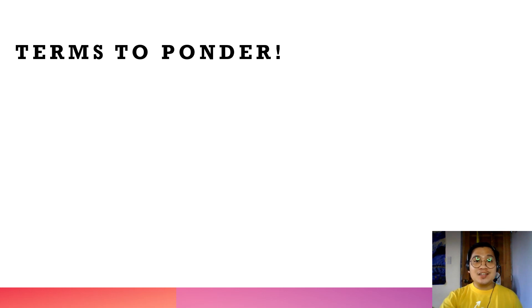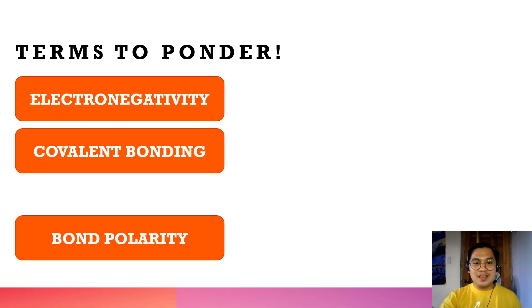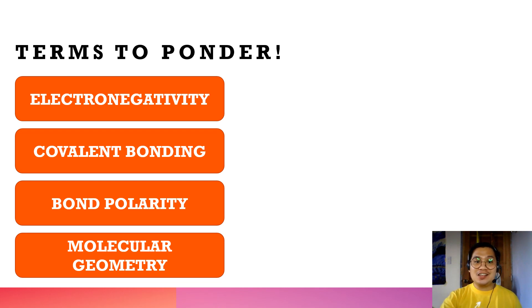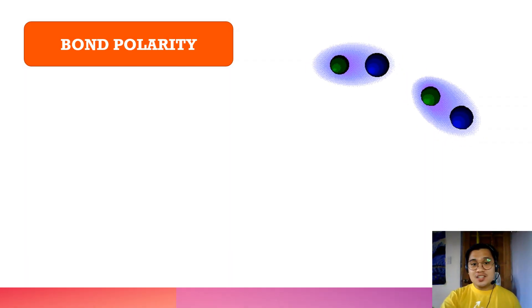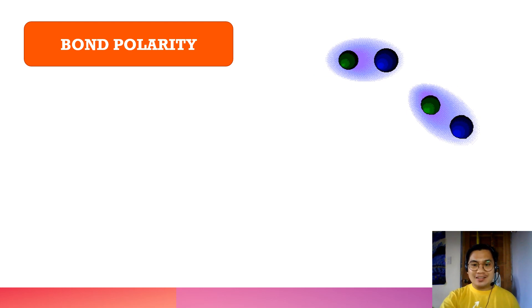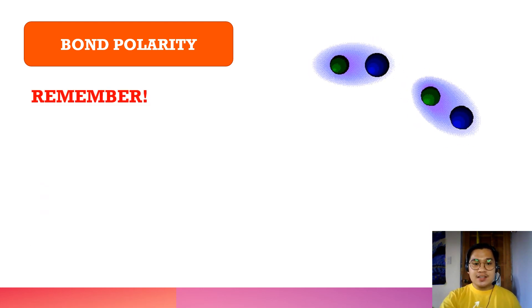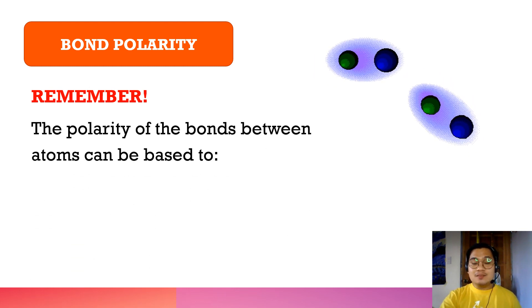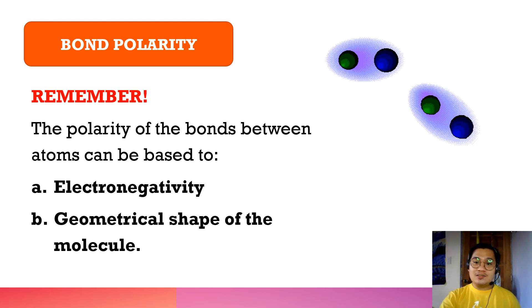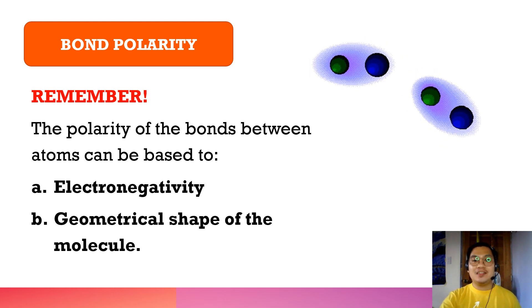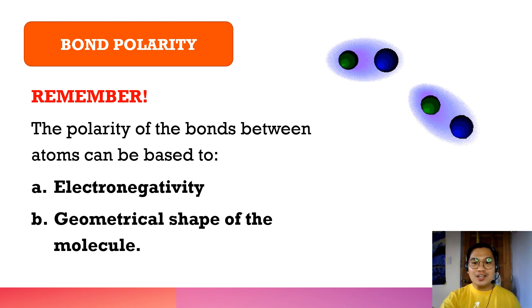For today's discussion, the main concepts you will encounter are electronegativity, covalent bonding, bond polarity, and molecular geometry. The first concept is bond polarity. The polarity of bonds between atoms can be based on electronegativity and the geometrical shape of the molecule. Bond polarity is about the attraction of two molecules to each other, forming different substances or molecules.